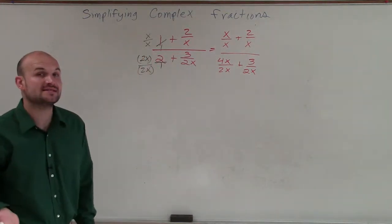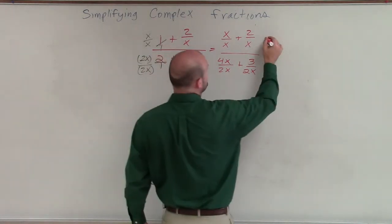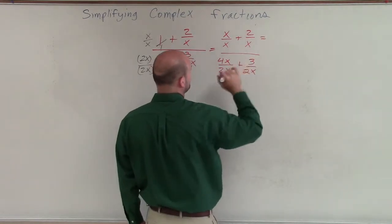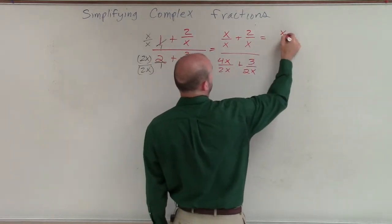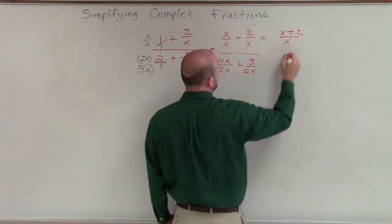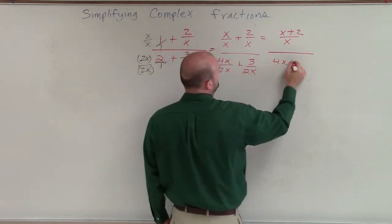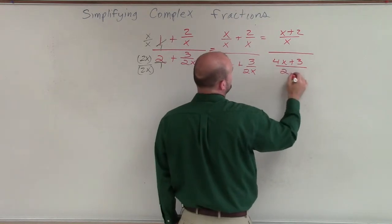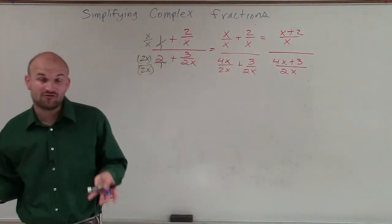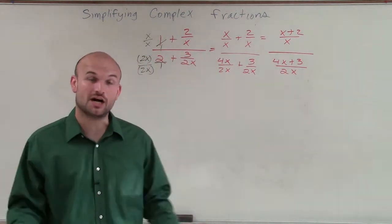So now I have common denominators. Now I can just combine my terms. So that's going to now equal, let's see, x plus 2 over x divided by 4x plus 3 divided by 2x. So now I have a single fraction being divided by another single fraction.